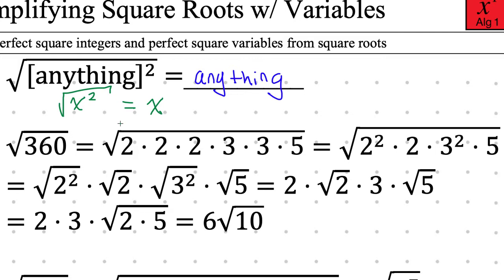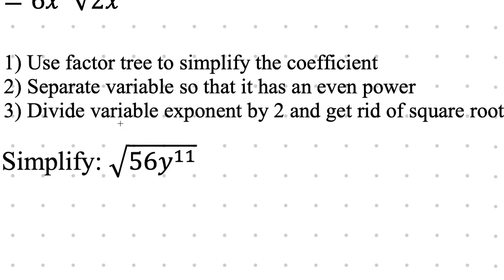Why am I showing you all this work? I'm showing you all that work because it's now going to apply that same rule to variables. Eventually I want to teach you the procedure, but I don't want to skip right to the procedure because that procedure wouldn't make sense — like, why are we dividing the variable exponent by 2? I'm trying to show you the rationale of the procedure, and then we'll get to the procedure.